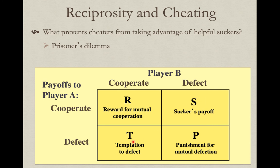On the other side: if player B cooperated but player A defects and takes advantage of them, that's the temptation to defect — you get a big benefit, possibly bigger than the reward from mutual cooperation. This leads to a system of distrust where nobody wants to cooperate. They tend toward mutual defections, and both suffer — even though if they would have just worked together, they could have gotten some gain.